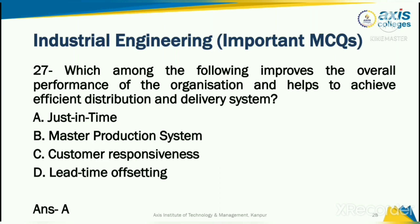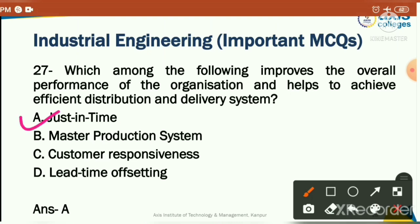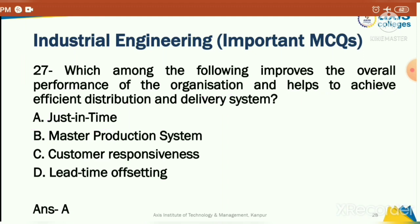Which among the following improves the overall performance of the organization and helps to achieve efficient distribution and delivery system? Options: just in time, master production system, customer responsiveness, or lead time offsetting. The correct answer is option A: just in time — the just-in-time system improves overall organizational performance and helps achieve efficient distribution and delivery.